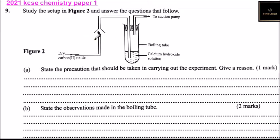So we have our figure 2 here. We have dry carbon dioxide being pumped, collected here into a boiling tube where it is delivered to a solution which is calcium hydroxide solution. Then we have the suction pump.